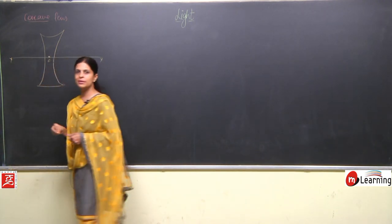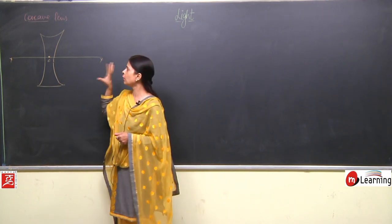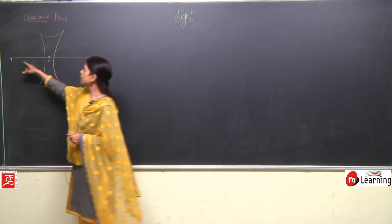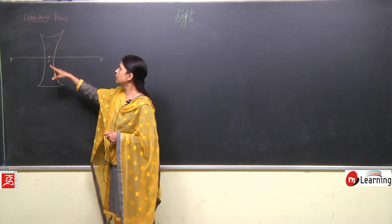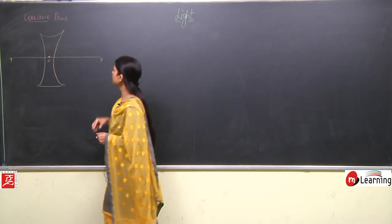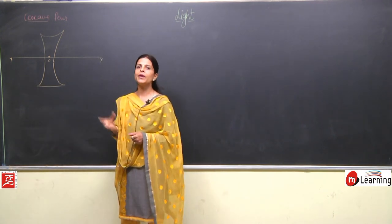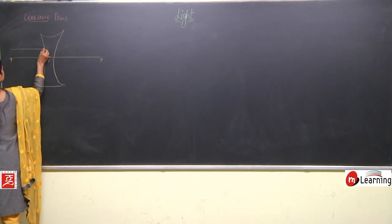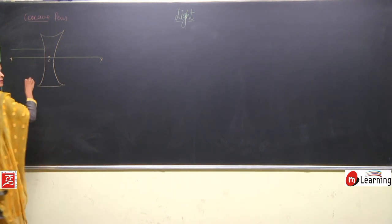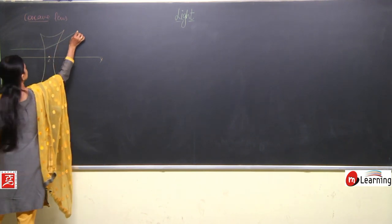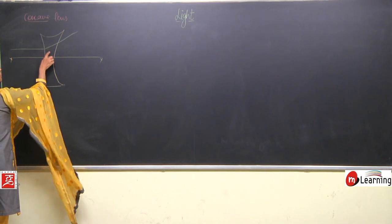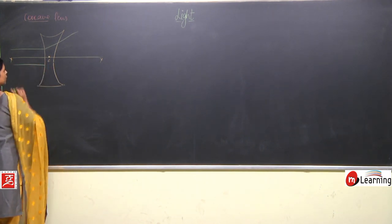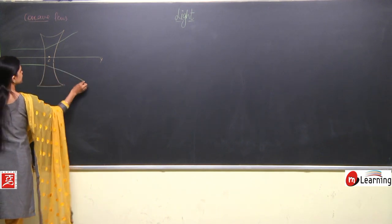This center point is represented as C or O. The center part of the lens is known as the optical center. The line which passes through the optical center is known as the principal axis. When rays parallel to the principal axis pass through a concave lens, they get scattered after refraction — the concave lens is a diverging lens.